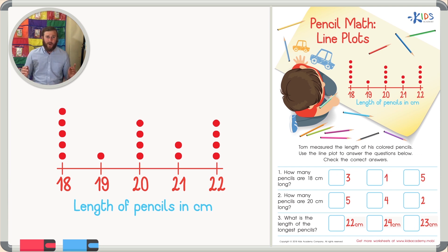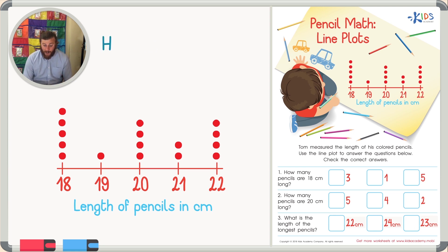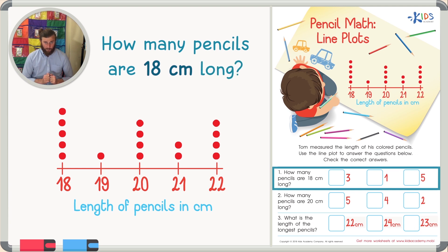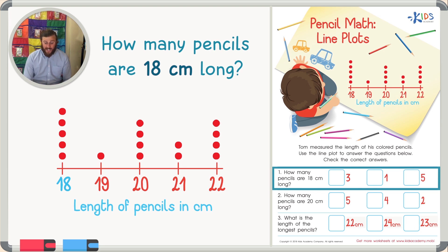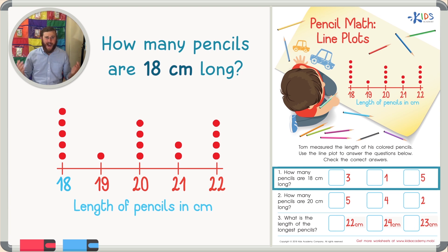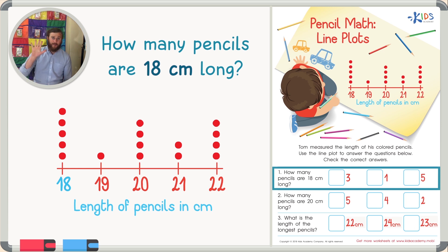The directions say: Tom measured the length of his colored pencils — use the line plot to answer the questions below. Question one: how many pencils are 18 centimeters long? We go to the number 18. Each dot represents just one colored pencil, so we count the dots above 18. Let's count them together: one, two, three, four, five dots — there are five pencils that are 18 centimeters long.